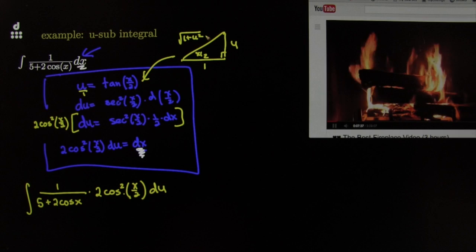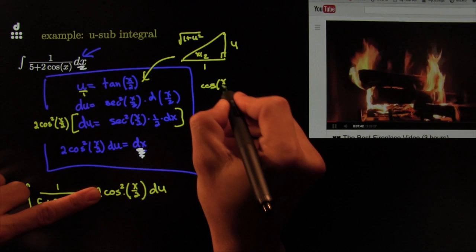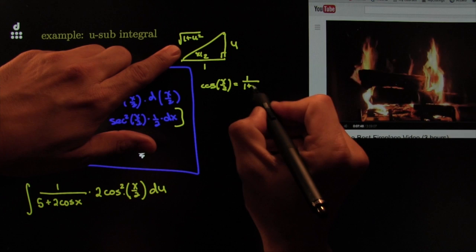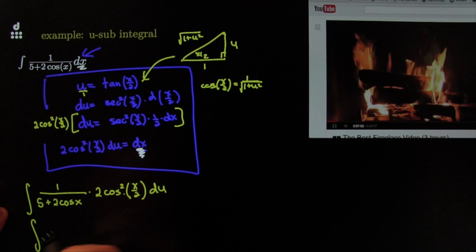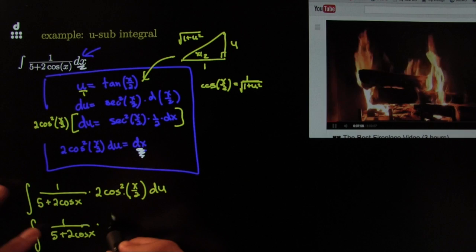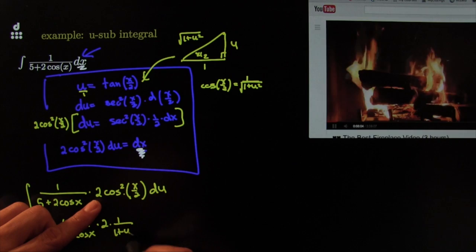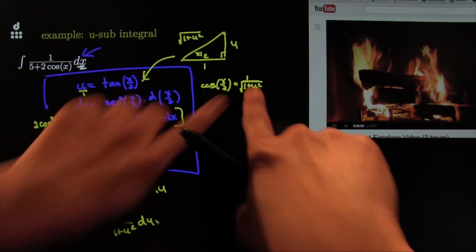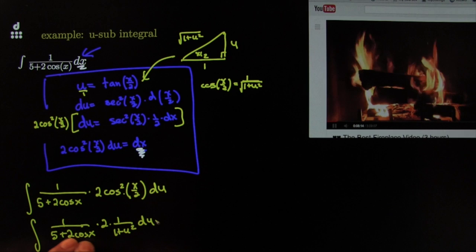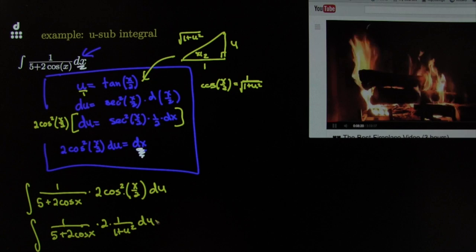Using the Pythagorean theorem, the hypotenuse is the square root of 1 plus u squared. From the triangle, cosine of x over 2 is adjacent over hypotenuse — that's 1 over the square root of 1 plus u squared. Squaring that, the integral becomes 1 over (5 plus 2 cosine x) times 2 times (1 over 1 plus u squared) du. That kills the square root, giving me u's here — but I still have an x in the cosine x term.